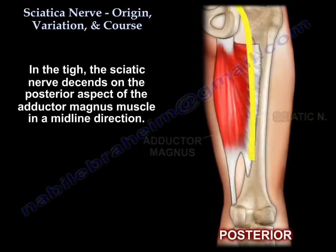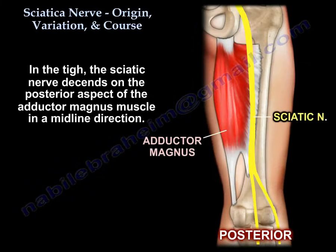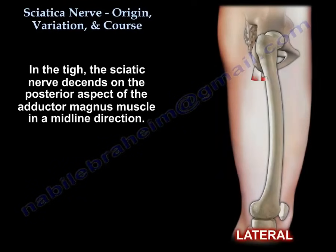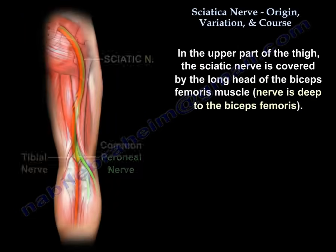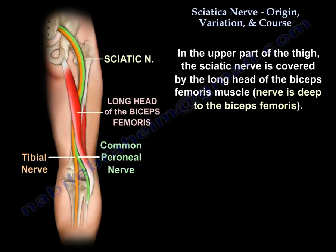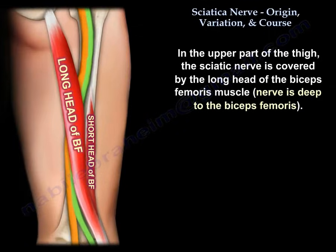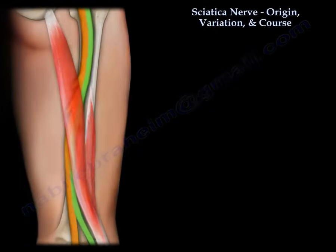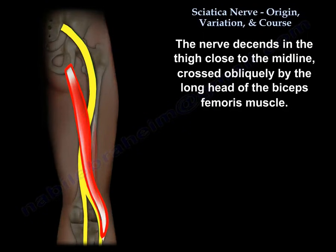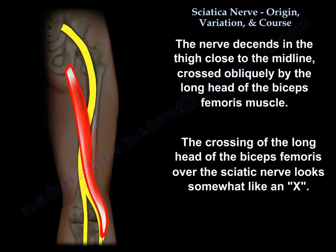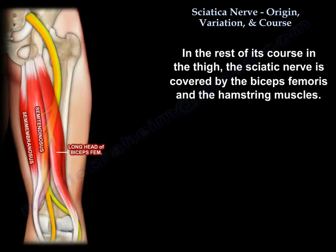In the thigh, the sciatic nerve descends on the posterior aspect of the adductor magnus muscle in a midline direction. In the upper part of the thigh, it is covered by the long head of the biceps, meaning the nerve is deep to the biceps. The nerve descends close to the midline and is crossed obliquely by the long head of the biceps femoris — this crossing looks somewhat like an X. In the rest of its course through the thigh, the nerve is covered by the biceps and hamstring muscles.